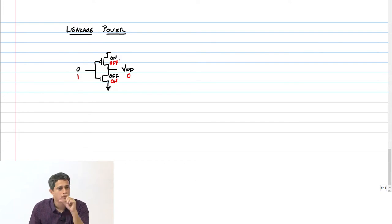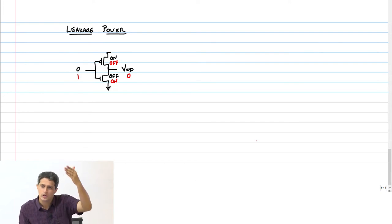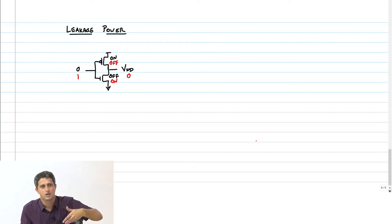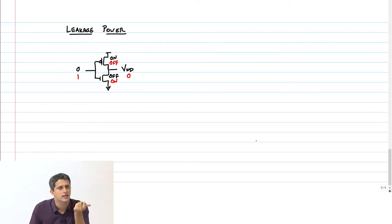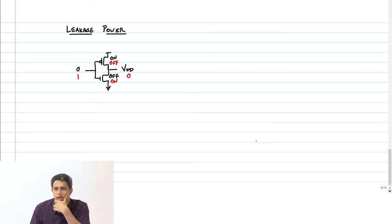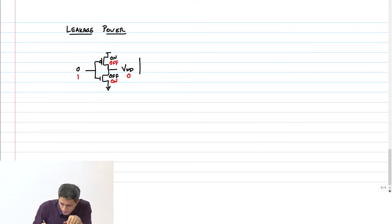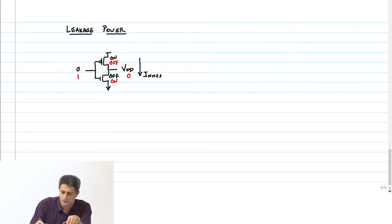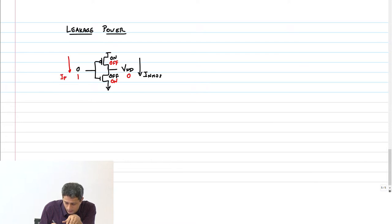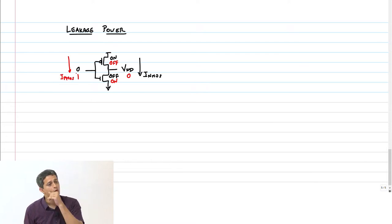The transistor that is on connects you to the supplies — either VDD or ground. So who is going to leak current when the input is 0? It is the NMOS transistor that is going to leak current. You have I_NMOS when the input is 0.